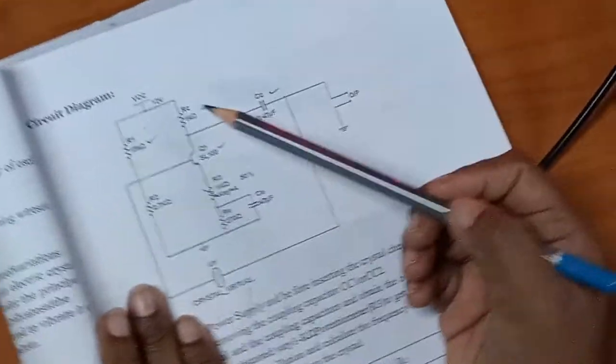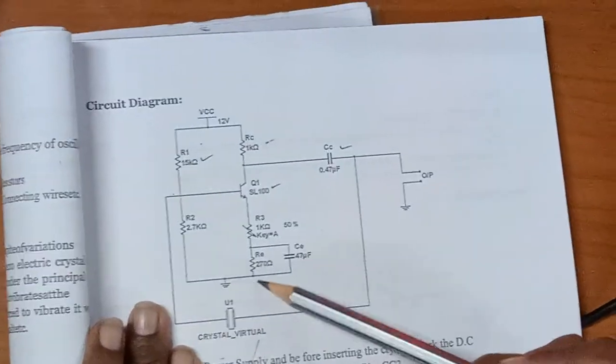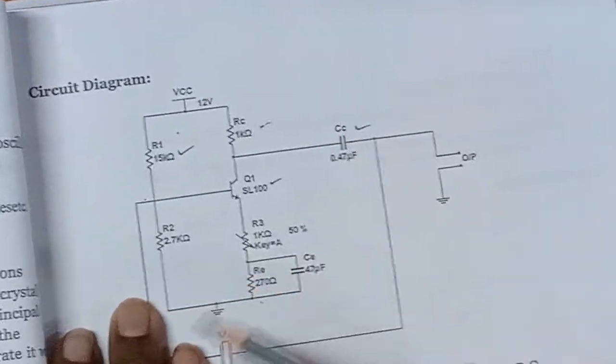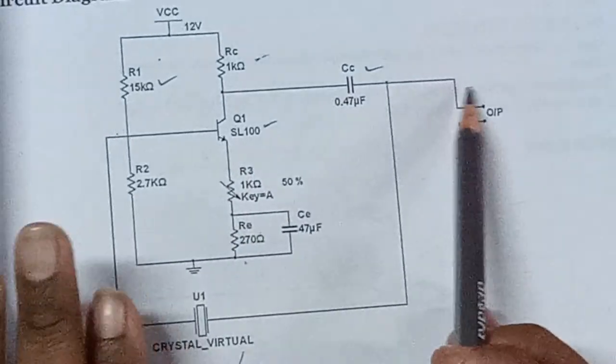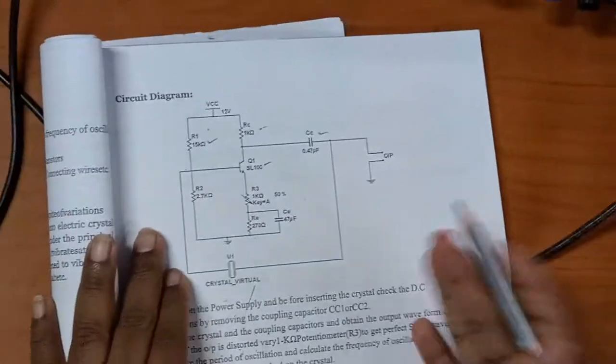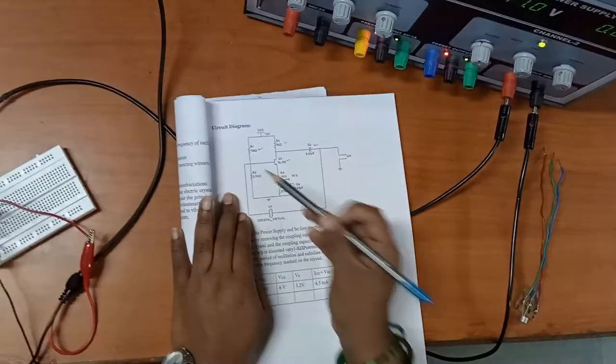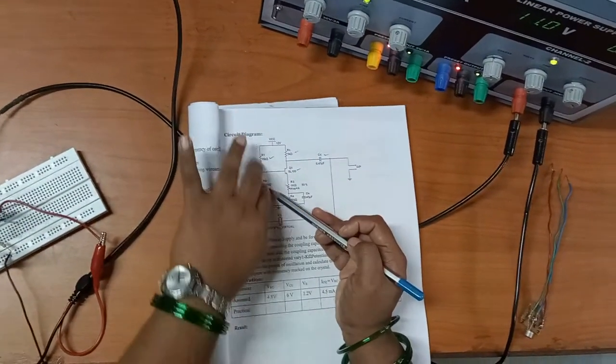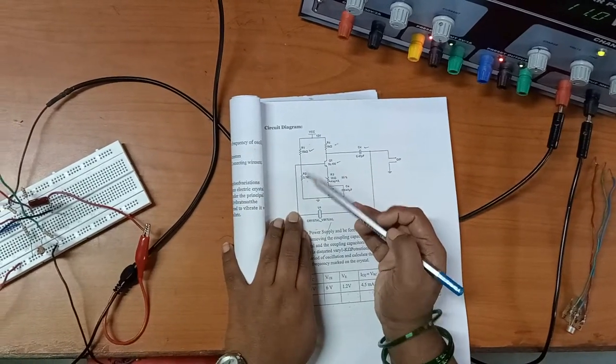We will design these values using Boylestad or any textbook. I am taking IC current of 4.5 milliamps. For that purpose, I am using R1 and R2 with parallel resistance for input impedance.